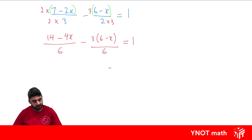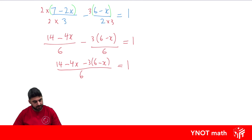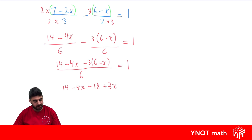Now we have the same denominator, so we can put it all over 6 and subtract the numerators: 14 minus 4x minus 3(6 minus x) all equals 1. Expanding the numerator: 14 minus 4x, then minus 3 times 6 is minus 18, and minus 3 times minus x is plus 3x. This is the most common mistake — the minus and the minus carry all the way through to give a positive term.